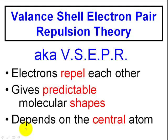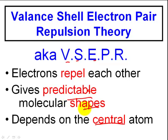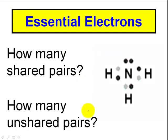A lot of this hinges on the central atom. The central atom is one of the keys to understanding the valence shell electron pair repulsion theory — abbreviated as the VSEPR theory. Electrons are going to repel each other, and when they do, we are going to have predictable molecular shapes. One of the things it hinges on is your central atom.